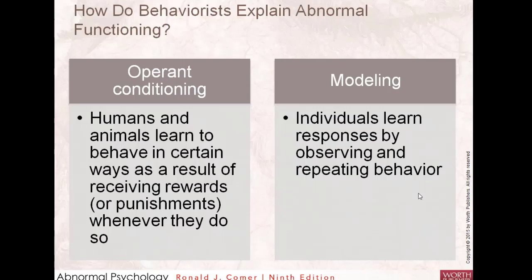Modeling says individuals learn responses by observing and repeating behaviors. You don't model everyone you see — typically you model the most relevant and successful models in your life. A child probably models their parents, especially the same-sex parent, as well as teachers and grandparents. We also tend to model people we respect or think of as successful. You can see a lot of modeling in high school — trying to be like the popular kids, wearing the same clothes as famous people. We really do learn a lot of what we know from watching other people.